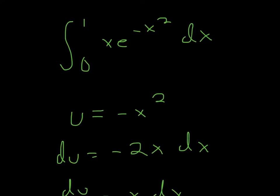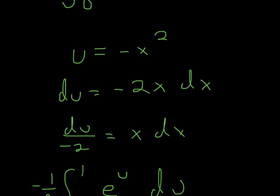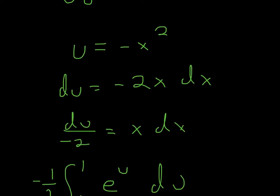Now, we look at the actual function. So is there a negative 2x in this function? Well, there's an x, so we need to get rid of this negative 2. So I'm going to divide by negative 2 on both sides, so it's going to be du over negative 2 equals x dx.